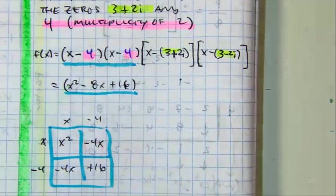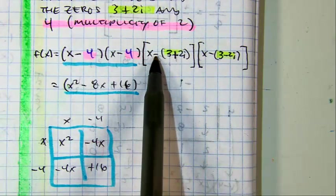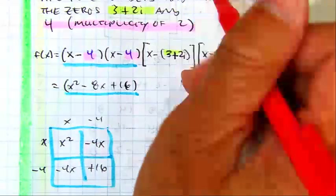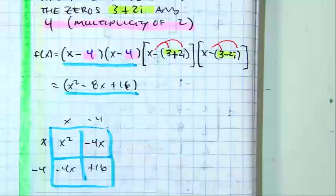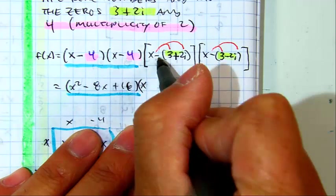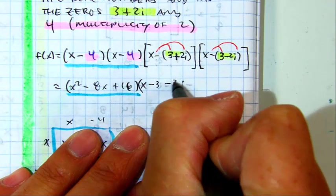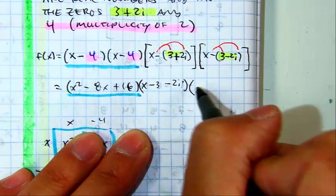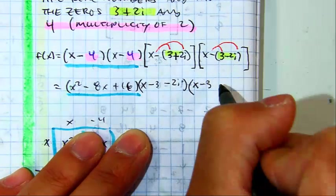For 15 years straight, this is the number one mistake for students. What do you think the mistake would be? They're not going to distribute the negative sign all the way through. So, this is going to give us x minus three, negative two I. What is this one going to become? X minus three plus two I.